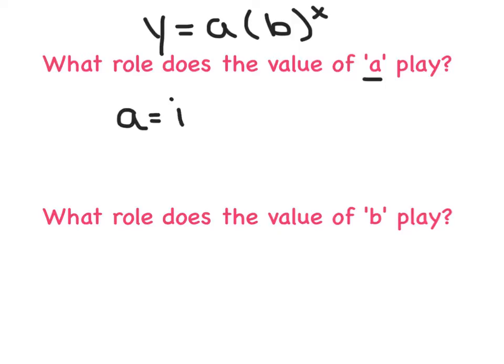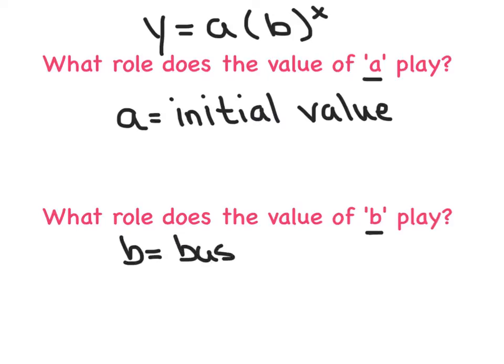And simply put, a represents the initial value that corresponds to when x equals 0. A lot of times, we'll use exponential functions to describe the population. And the letter a will be the initial population of a city or town. What role does the value of b play? Now, this one's a little more complicated. First of all, b stands for the base, which makes sense.